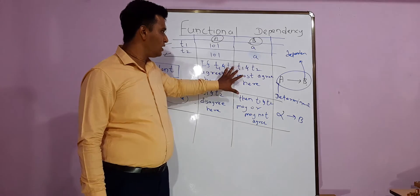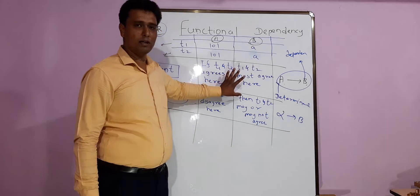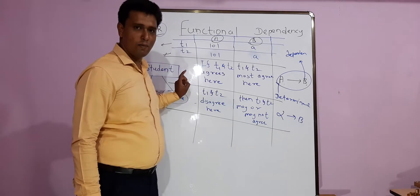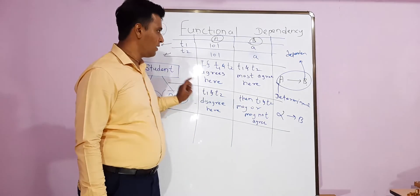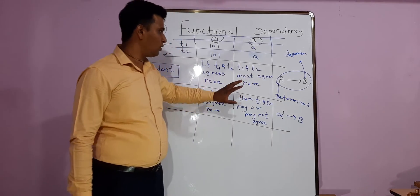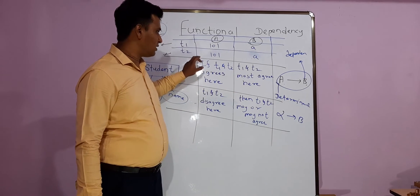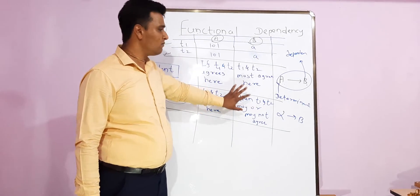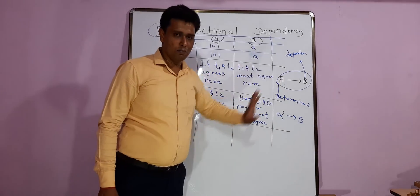Now T1 and T2, it should be consistent for all the tuples. If T1 and T2 agree here means what? T1 and T3 also should agree, T1 and T4 should also agree, and T1 and T2 must agree here means all, like T1 and let's say T3 and T4 agree here, then again T3 and T4 must agree here. If this happens, then we can say A determines B.